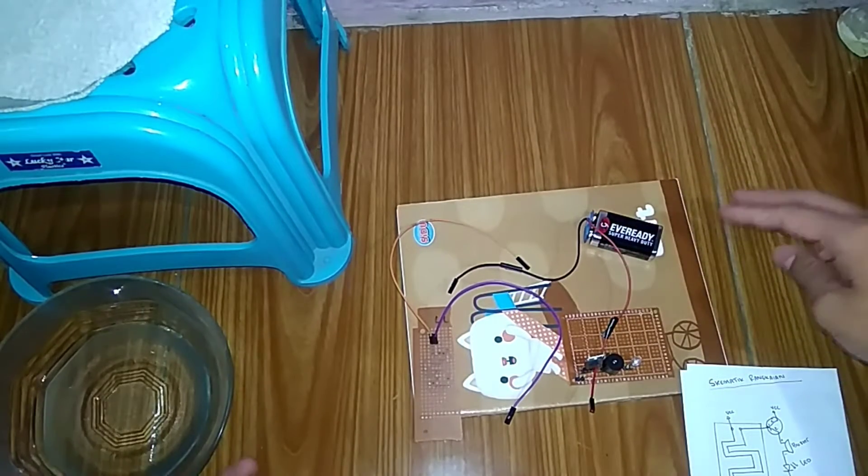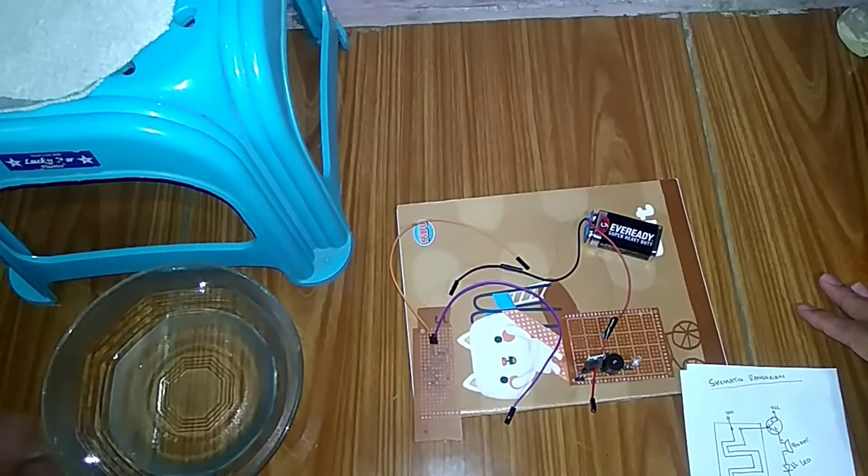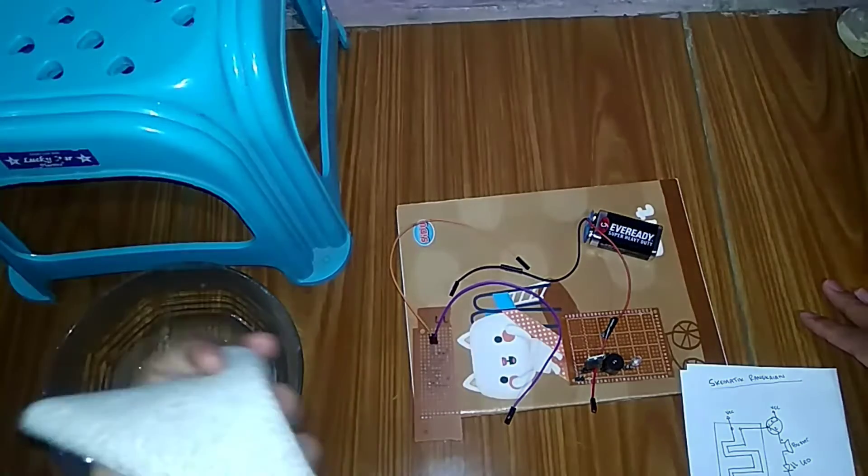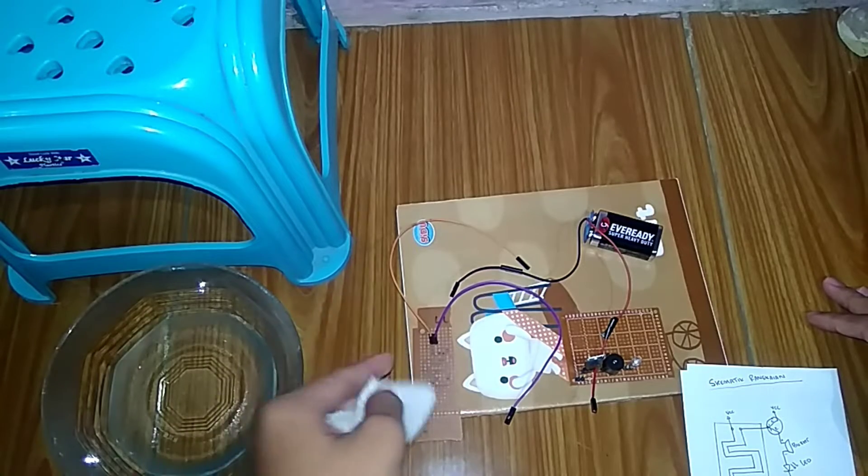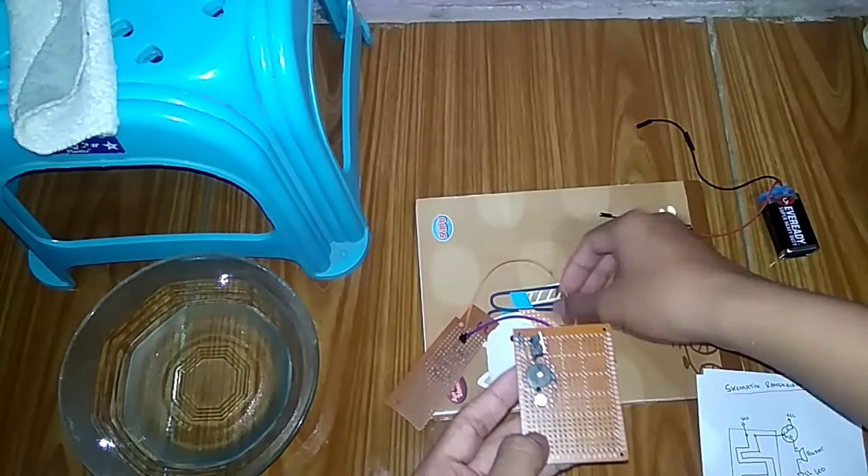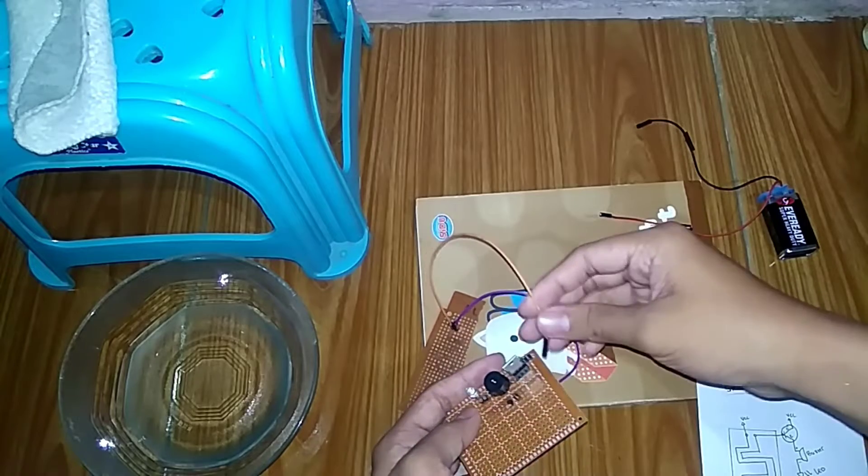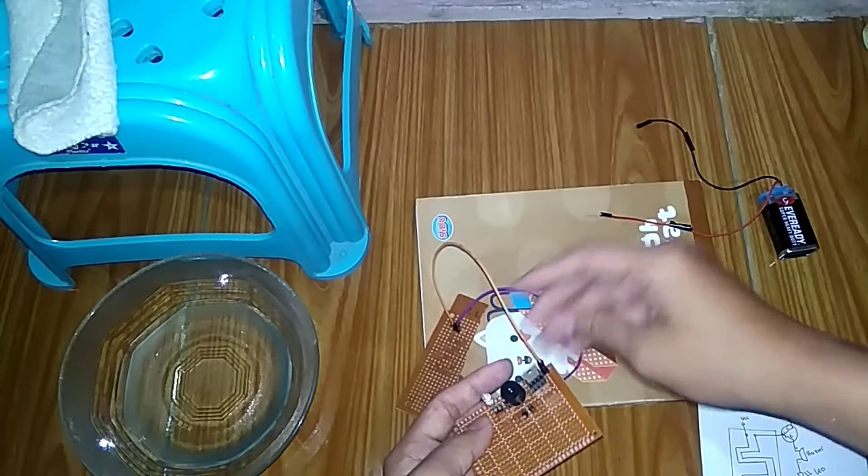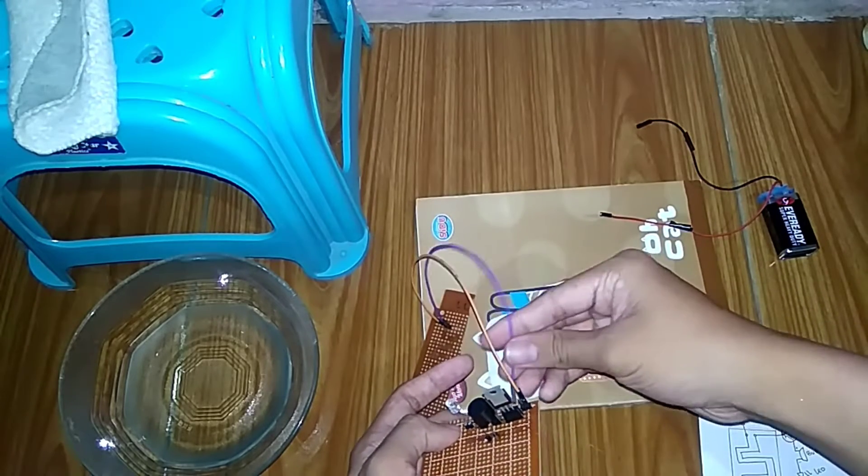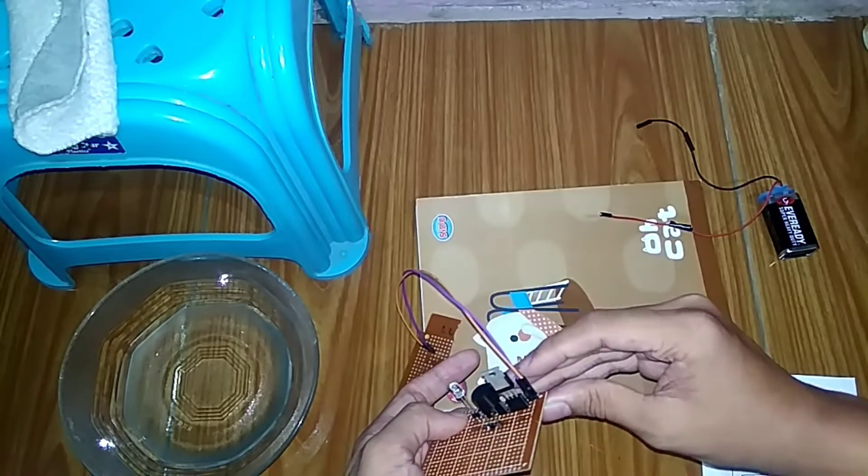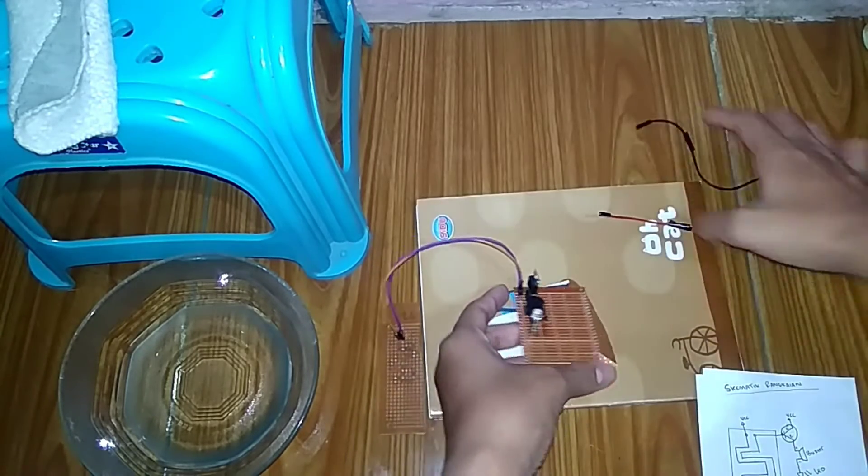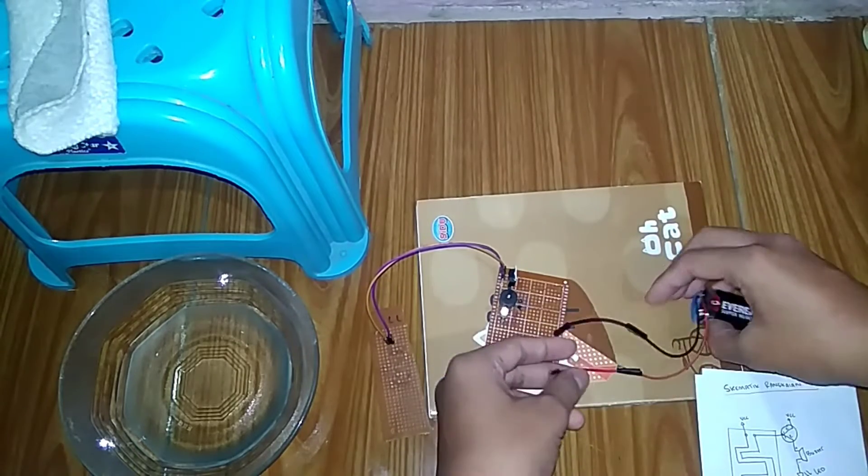Here I have prepared water and a cloth that we will apply to the sensor circuit. So we connect the orange wire to VCC first before simulating. Now we connect it to the basis leg, then attach ground and VCC from the battery.